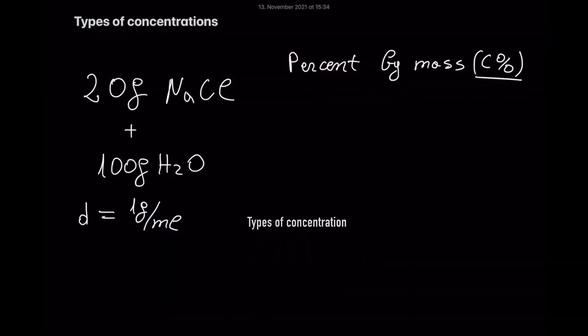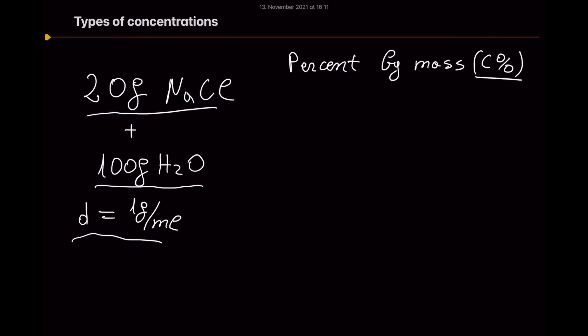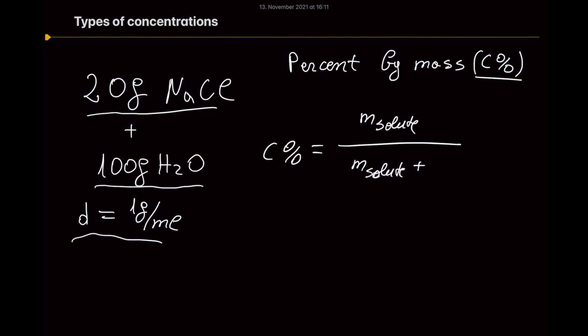First, let's look at percent by mass. Here we have the first example. Percent by mass is equal to the mass of the solute divided by the mass of the solute plus the mass of the solvent.